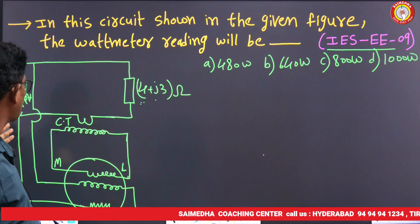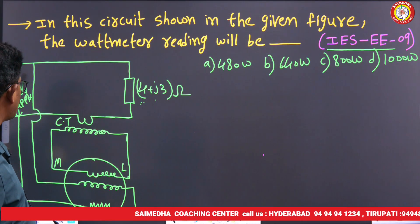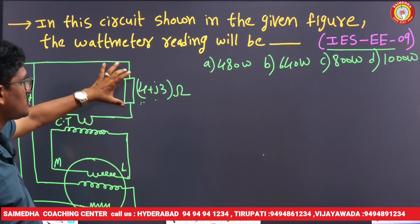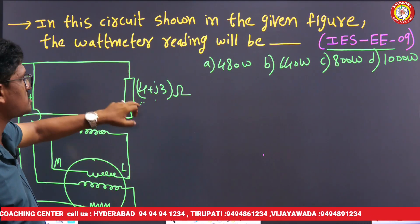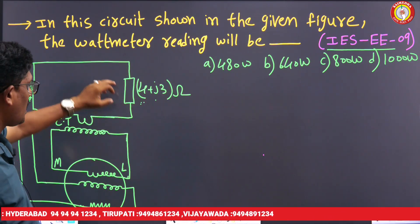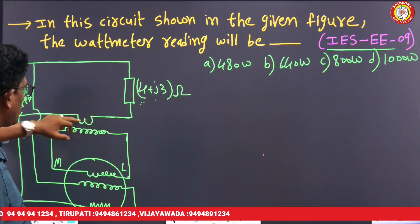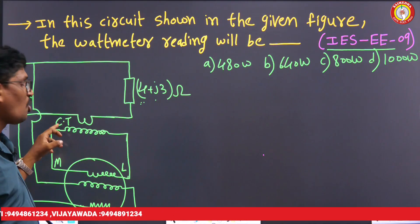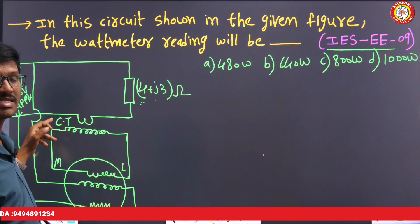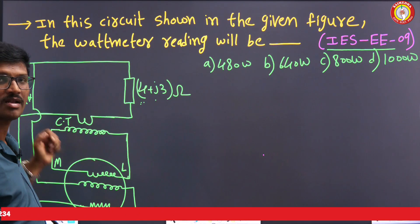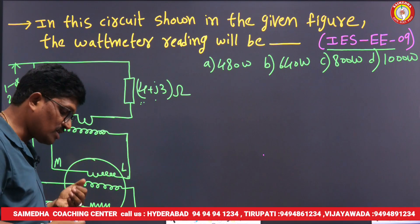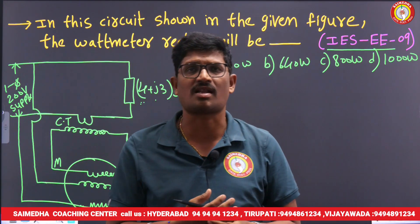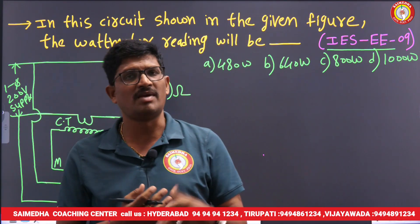This is a single phase circuit. In this single phase circuit, the supply is 200 volts and the load impedance is R plus J3. Here in this single phase circuit, I will connect one CT — this is a current transformer.